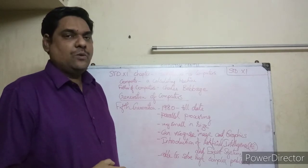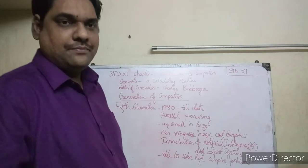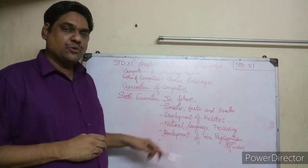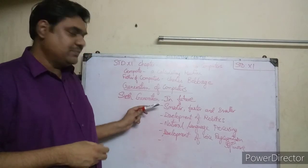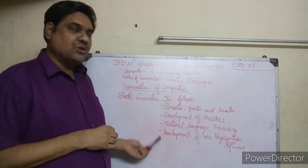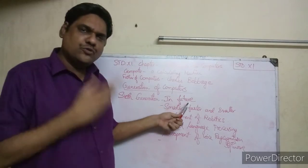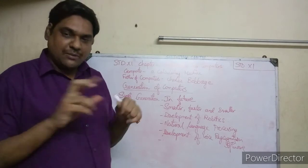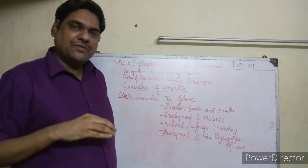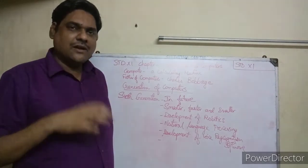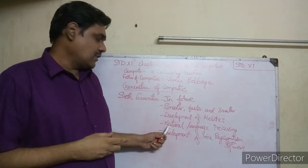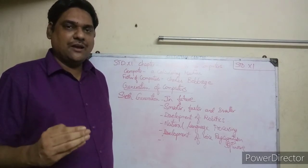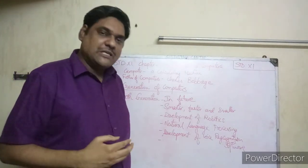Now let us see the sixth generation computers - this is the future generation. Currently research is ongoing to develop even smarter and faster computers. Key developments include robotics - where computers are fixed inside robots so that robots can do everything on their own, thinking and acting like human beings to a certain extent. Another area is natural language processing - so computers can understand natural human languages more effectively.